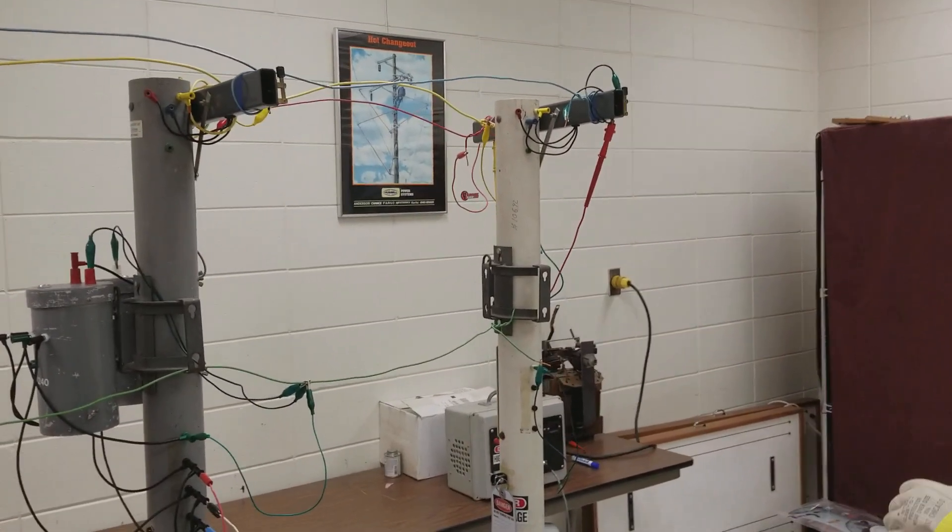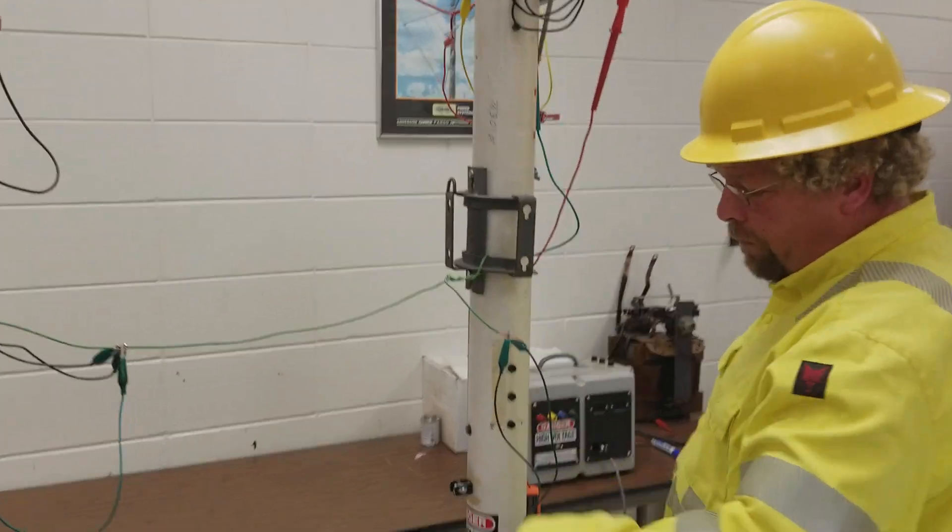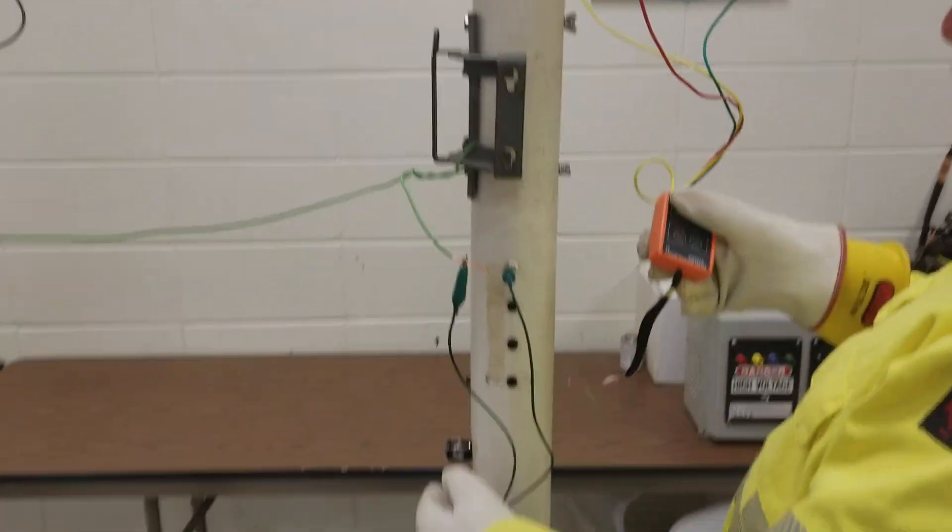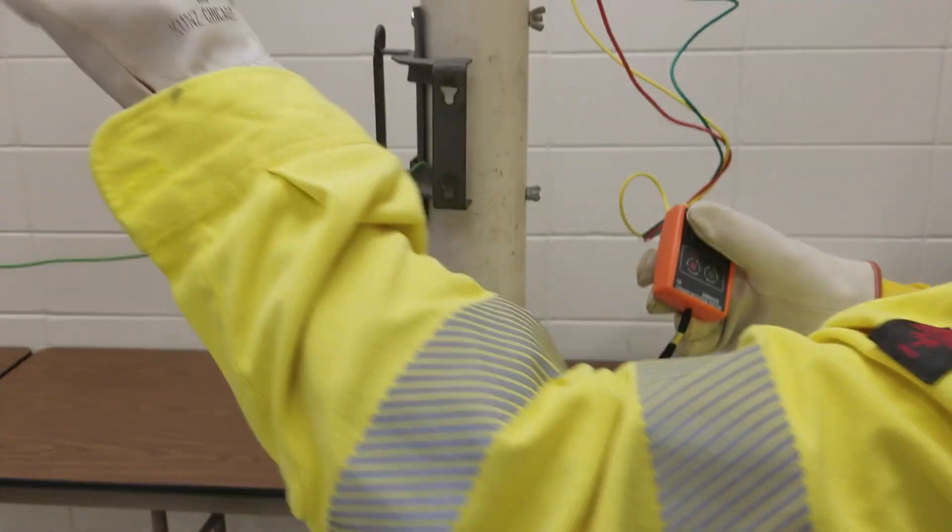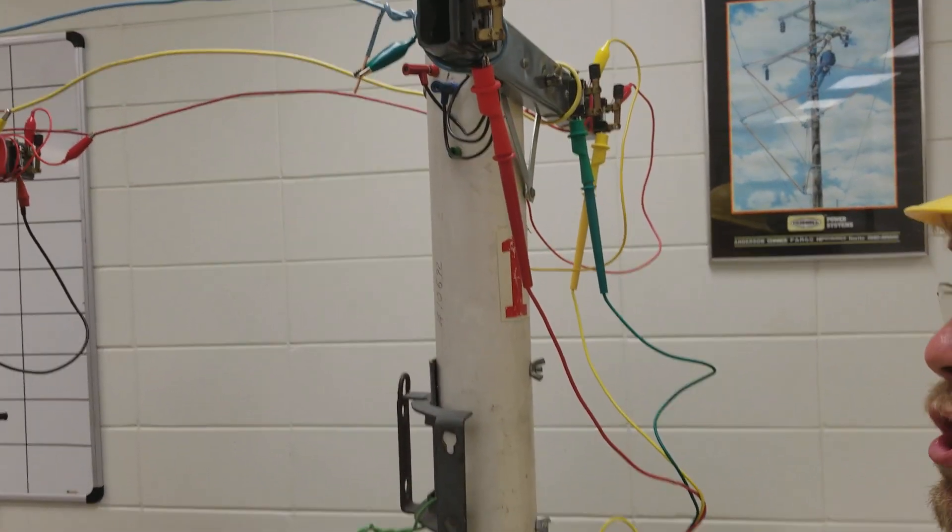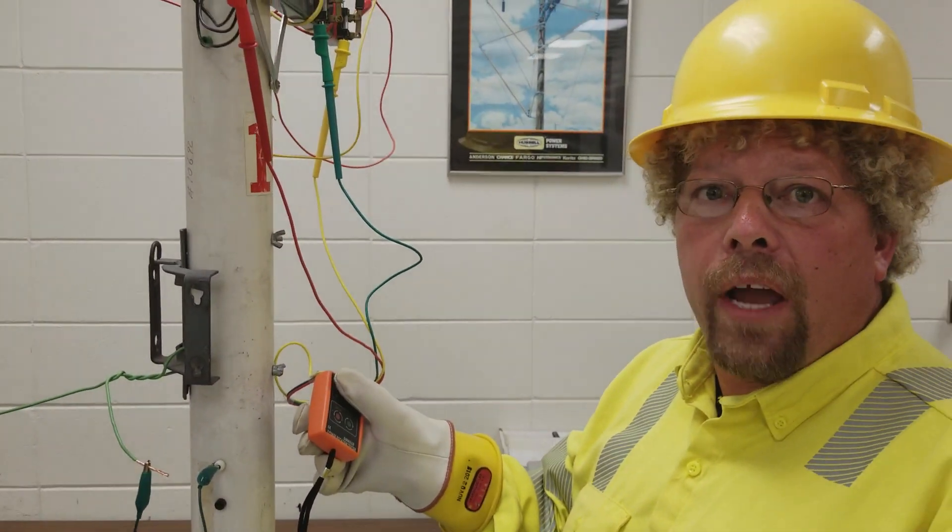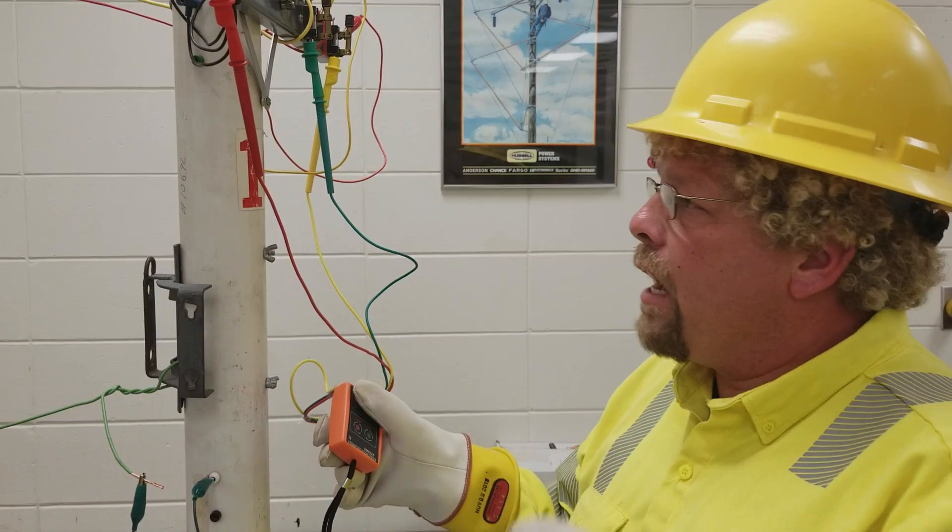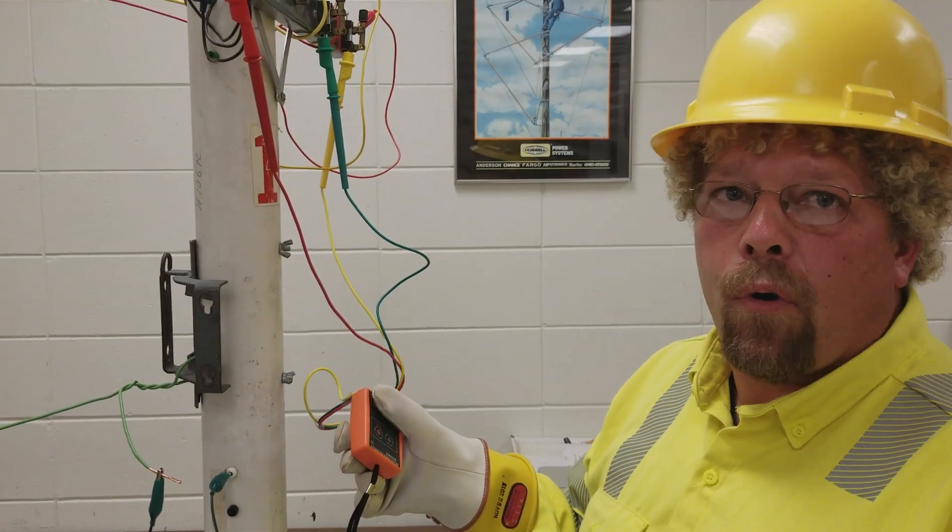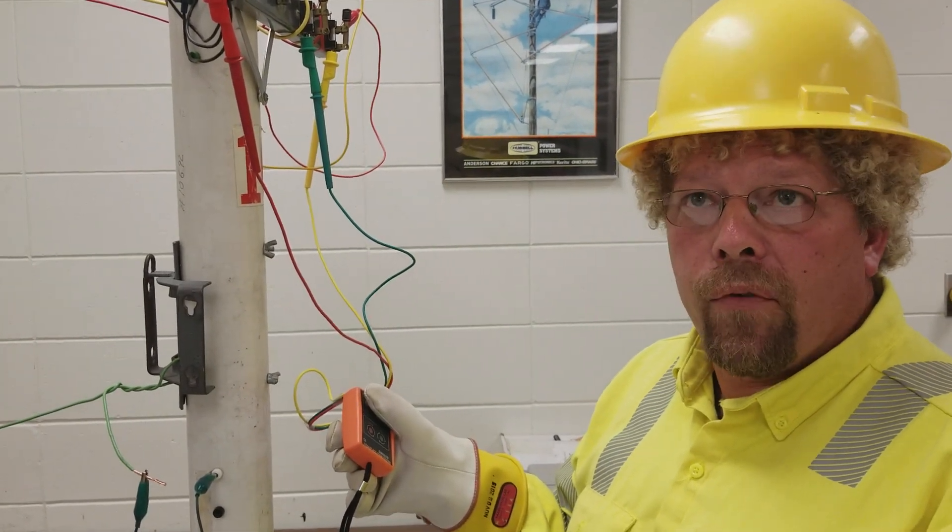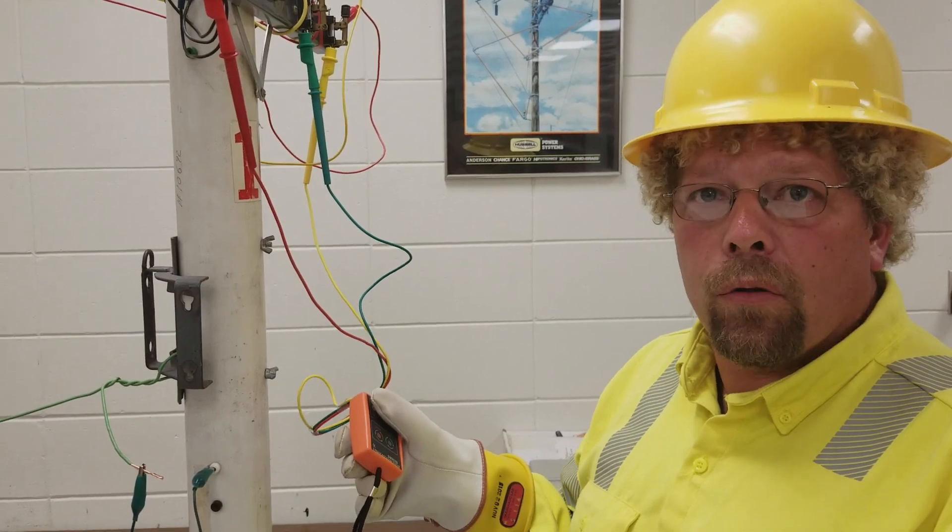So what we're going to do first, we're going to energize the system. So this rotation meter is hooked up to the primary. By the way, these transformers are actual transformers. There's a primary and a secondary winding in the transformers. And the voltage that comes out of these transformers is real, 120, 240 with a 208 volt wild leg.